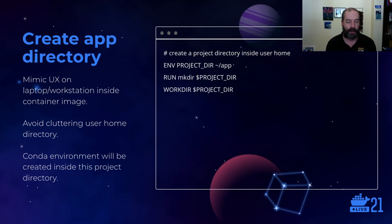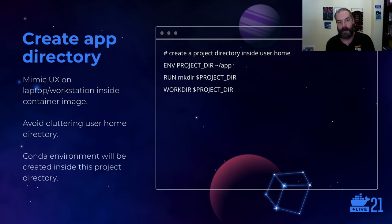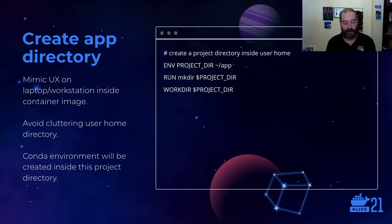Instead of cluttering up the user's home directory with all of the application source code and other project-related stuff, I create a separate app directory inside the user home directory. All local volumes will be mounted into this app directory inside the container, keeping everything neat and tidy. This also follows best practice I encourage at KAUST — to encapsulate all project files together in a single directory, including your software stack. We'll be installing our Conda environment inside a subdirectory of this app directory.